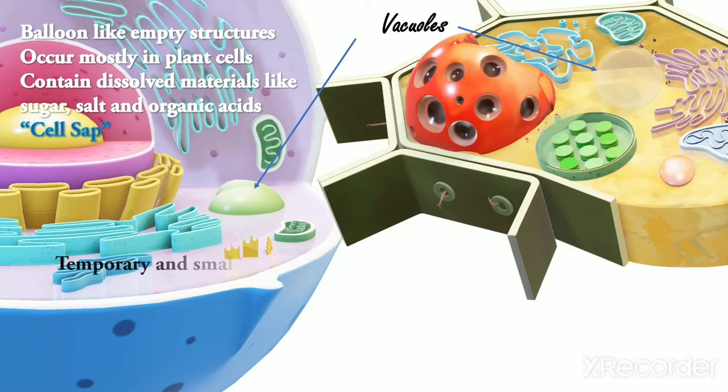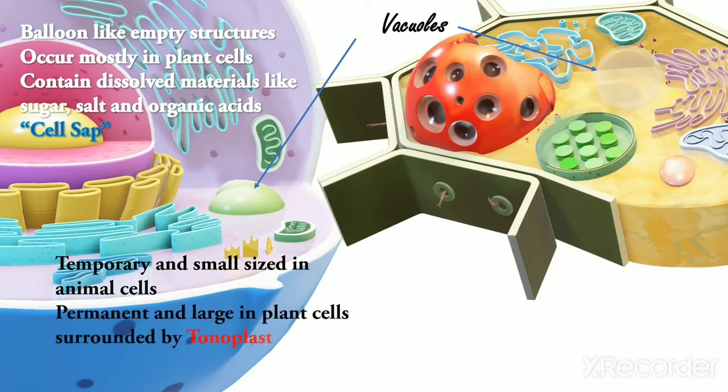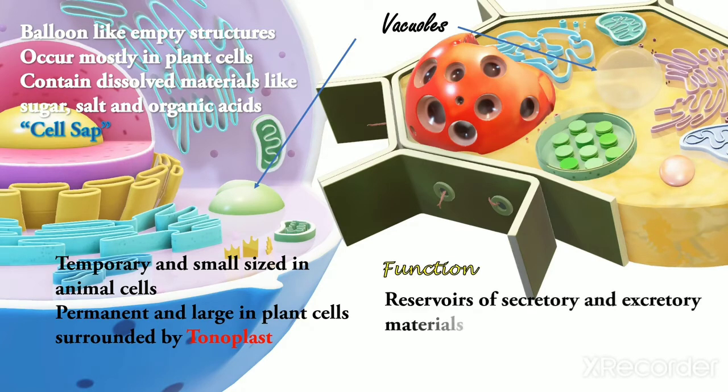These are temporary, small-sized in animal cell, while plant cells have a permanent single large central vacuole and are surrounded by a living semi-permeable membrane called tonoplast. Function: They act like reservoir of secretory and excretory material and help in water storage within the cell.